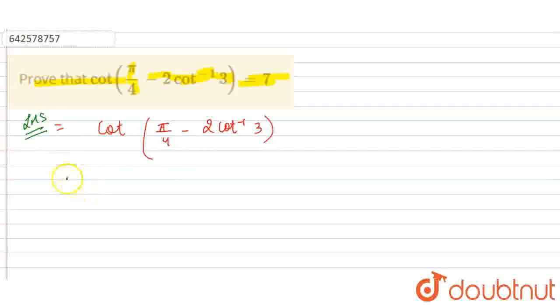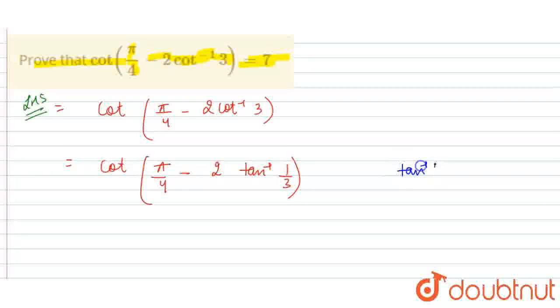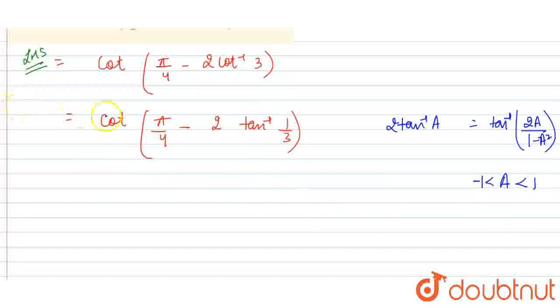Here we have, this is equal to cot 5/4 minus. Now, cot inverse 3 can be written as tan inverse 1/3 because it's the reciprocal. So, now, we know the formula of 2 tan inverse A, which equals tan inverse of 2A upon 1 minus A squared. And this is when A lies between -1 and 1. So we are going to apply it over here in this part, 2 tan inverse 1/3.